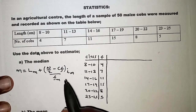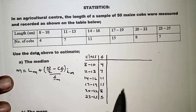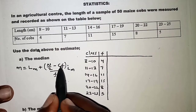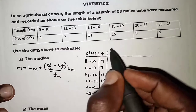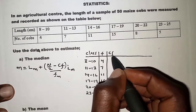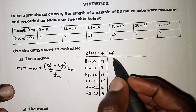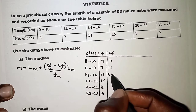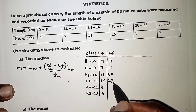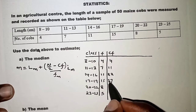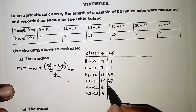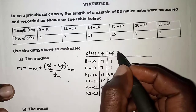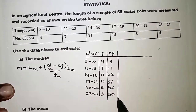We need a column for cumulative frequency. The cumulative frequencies are: 4, 11, 22, 37, 45, and finally 50. With this we can answer part (a) of the question.